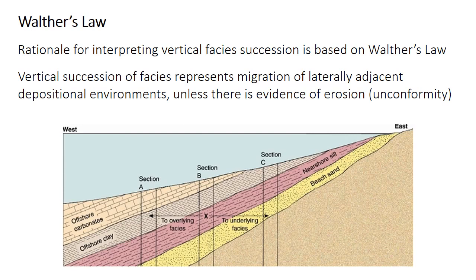In the example here, which depicts shallow marine environments, the beach sand is the shallowest environment, and it is adjacent to the nearshore silt, which is next to the offshore clay and finally the offshore carbonates. Because beach sand and nearshore silt are laterally adjacent environments, their deposits are vertically superimposed in any of the sections. In section C, section B, or section A, the nearshore silt is always on top of the beach sand.